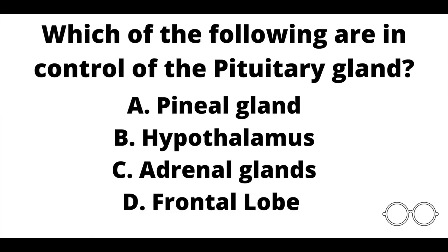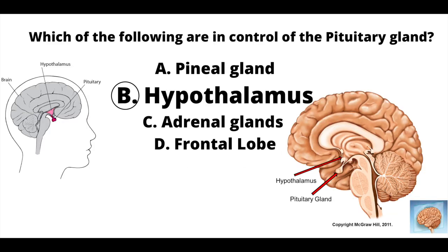Question number fourteen. Which of the following are in control of the pituitary gland? A: the pineal gland. B: hypothalamus. C: adrenal glands. Or D: frontal lobe? Our answer here is B, the hypothalamus. The pituitary gland — specifically the anterior pituitary — is known as the master gland, but what controls the pituitary is the hypothalamus. As you can see from the image, they are very close in proximity.